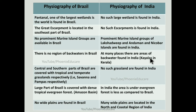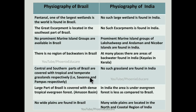The central and southern parts of Brazil are covered with tropical and temperate grasslands. The central or tropical part of Brazil has a grassland called Savannah, while the temperate part — below the Tropic of Capricorn — has a grassland called Pampas. No such big grasslands are found in India.